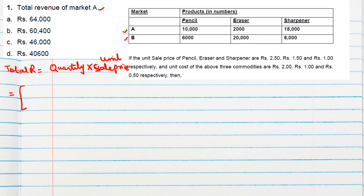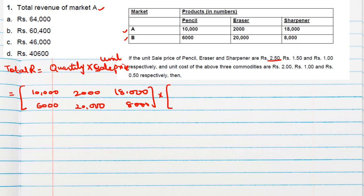The quantity matrix for Market A and B is: 10,000; 6,000; 2,000 in the first row and 20,000; 18,000; and 8,000 in the second row. We multiply this by the sale price matrix: 2.5, 1.5, and 1. This is a 2×3 matrix multiplied by a 3×1 matrix, giving a 2×1 result.